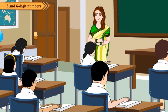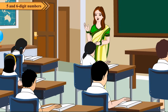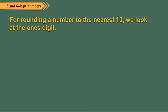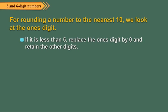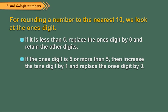In the previous class, we learned how to round off numbers to the nearest tens. For rounding a number to the nearest ten, we look at the ones digit. If it is less than 5, replace the ones digit by 0 and retain the other digits. If the ones digit is 5 or more, increase the tens digit by 1 and replace the ones digit by 0.